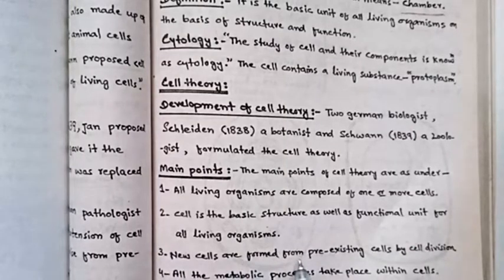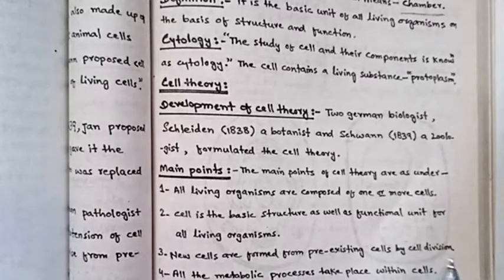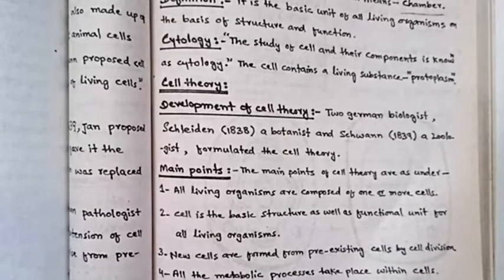Third point: new cells are formed from pre-existing cells by cell division. Fourth, all metabolic processes take place within the cell. Fifth, all cells contain the hereditary material of the organism which is passed from parents to daughter cells.